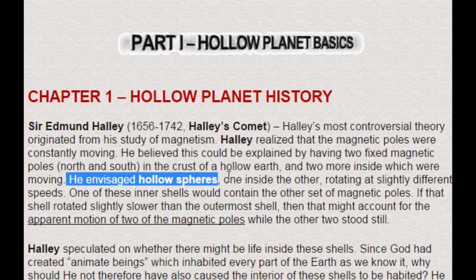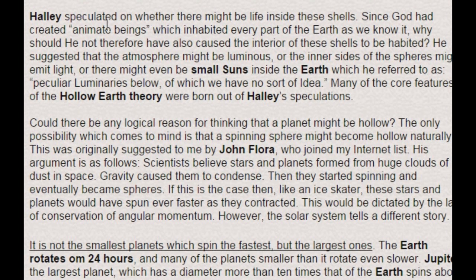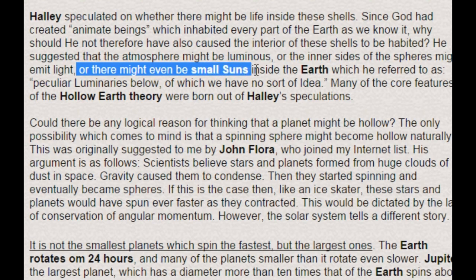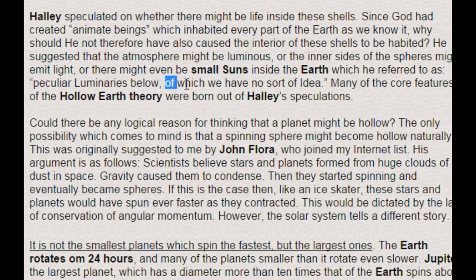Halley envisaged hollow spheres, one inside the other, rotating at slightly different speeds. One of these inner shells would contain a separate set of magnetic poles. If that shell rotated slightly slower than the outermost shell, that might account for the apparent motion of two of the magnetic poles while the other two stood still. Halley speculated on whether there might be life inside these shells — since God had created animated beings inhabiting every part of the Earth, why should he not also have caused the interior to be inhabited? He suggested the atmosphere might be luminous, or that there might be small suns inside the Earth, which he referred to as peculiar luminaries.